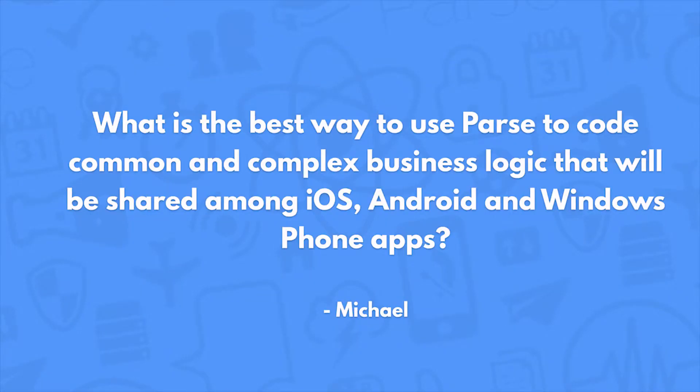What is the best way to use Parse to code common and complex business logic that will be shared among iOS, Android, and Windows Phone apps? This is very common when people get started. I recommend everybody push as much of your logic into cloud functions — the cloud code. Rather than building a query on the client in your iOS app and then building it again in your Android app and Windows Phone app, put all of that query logic into a cloud function that returns the proper results.